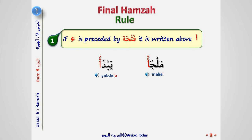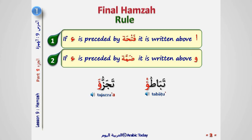Examples: Malja, Yabda'u. If Hamza is preceded by Dhamma, it is written above Waw.